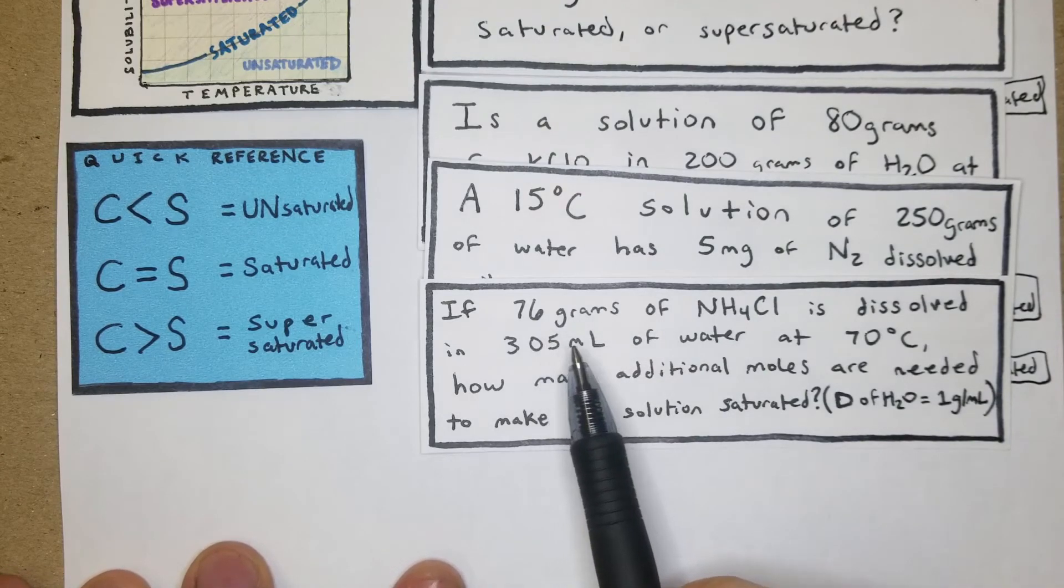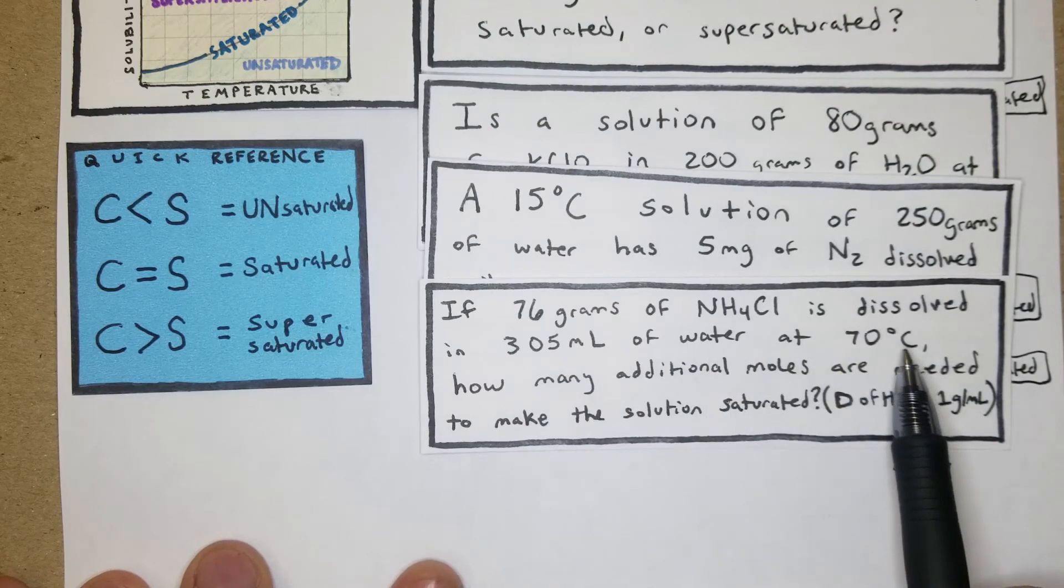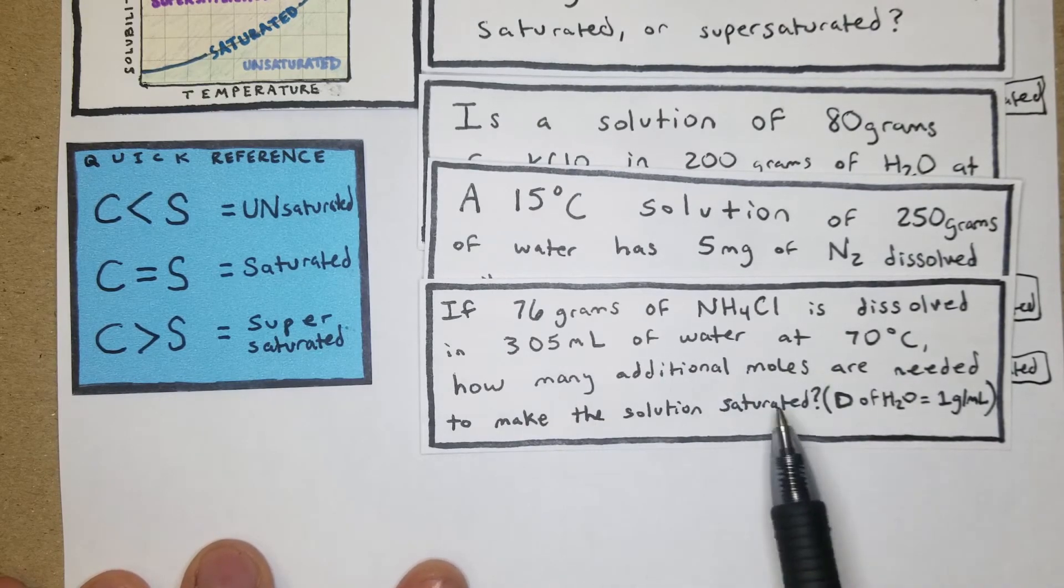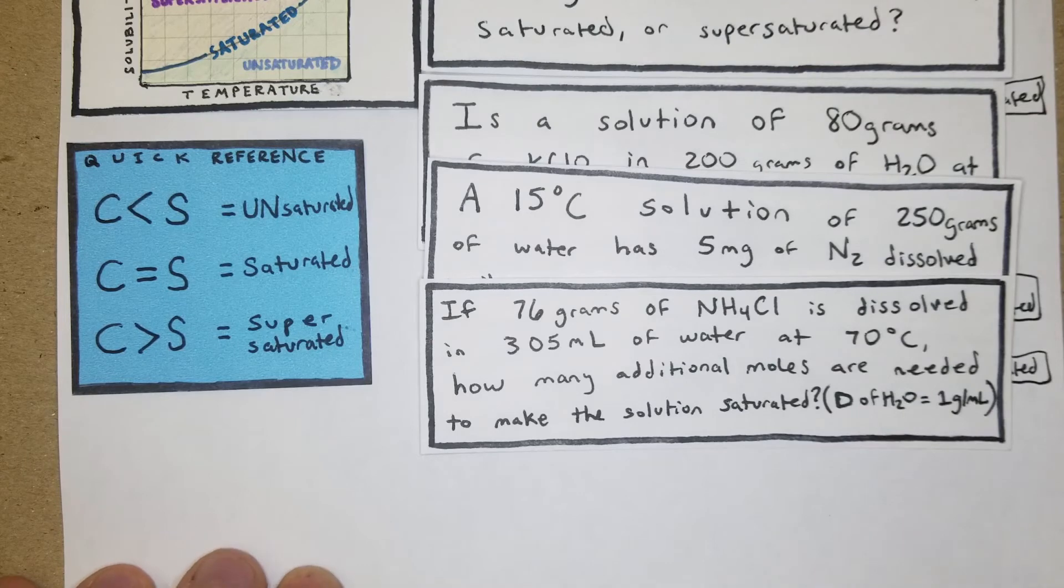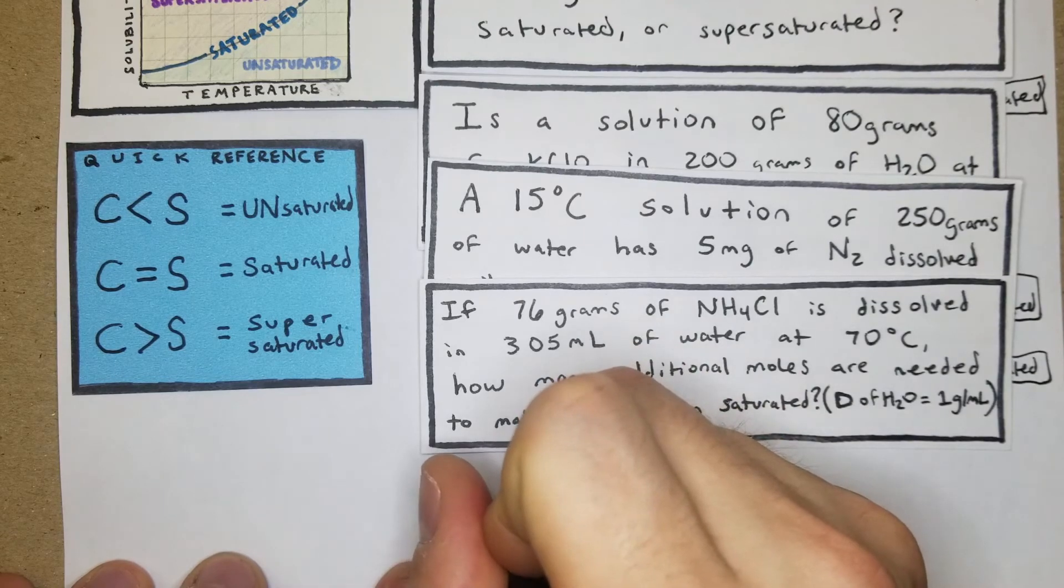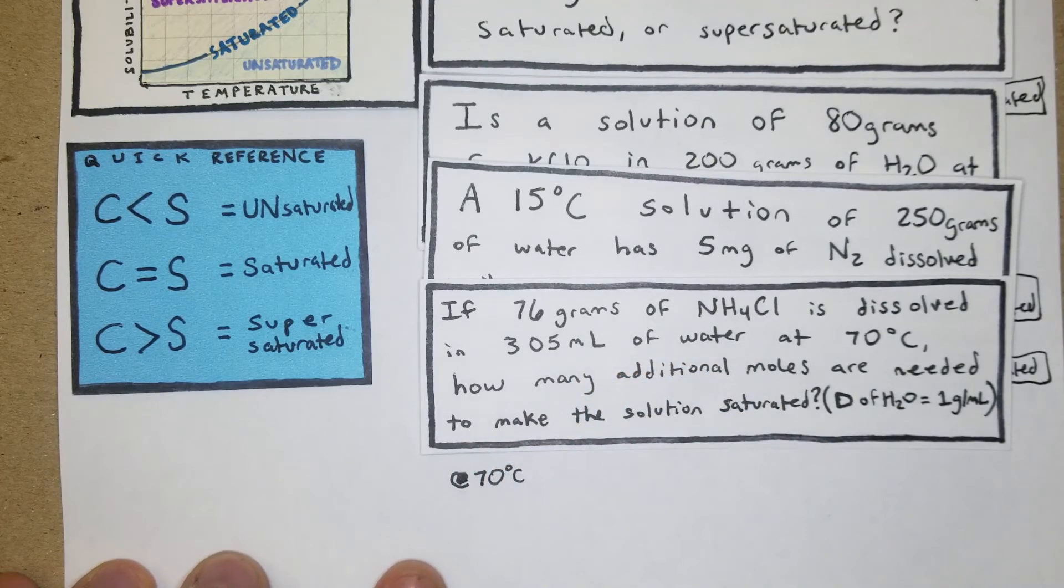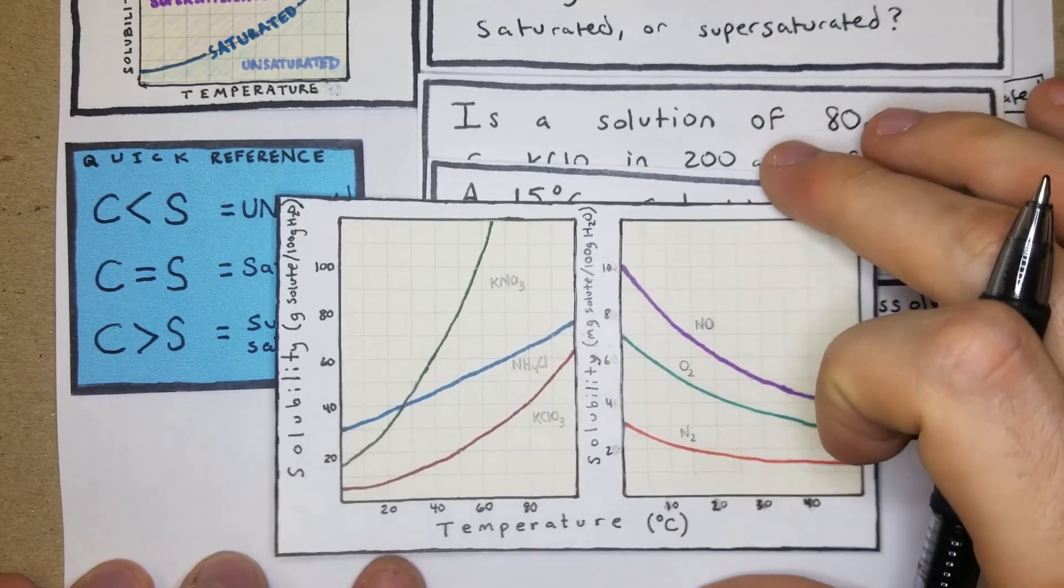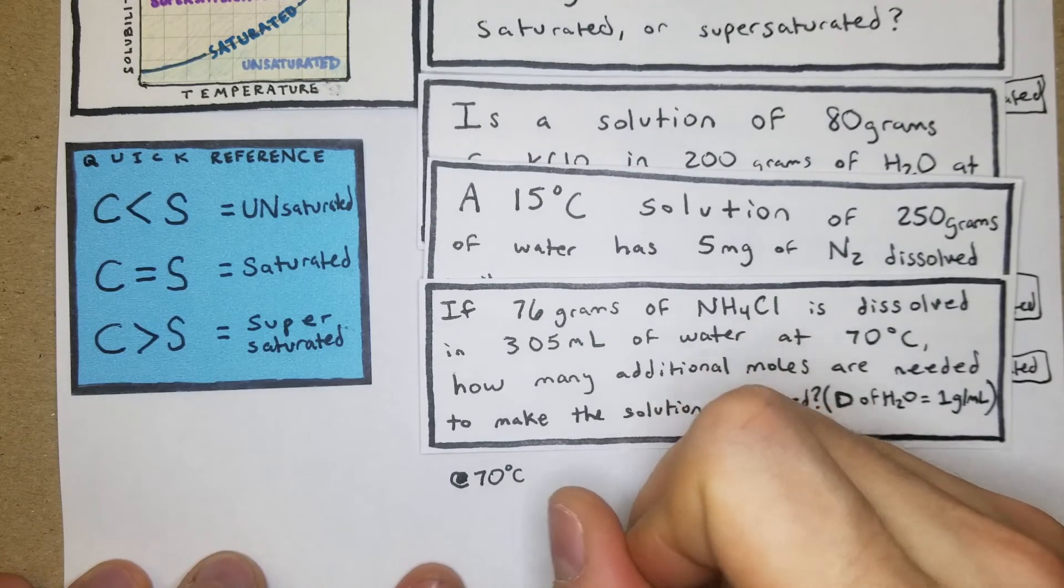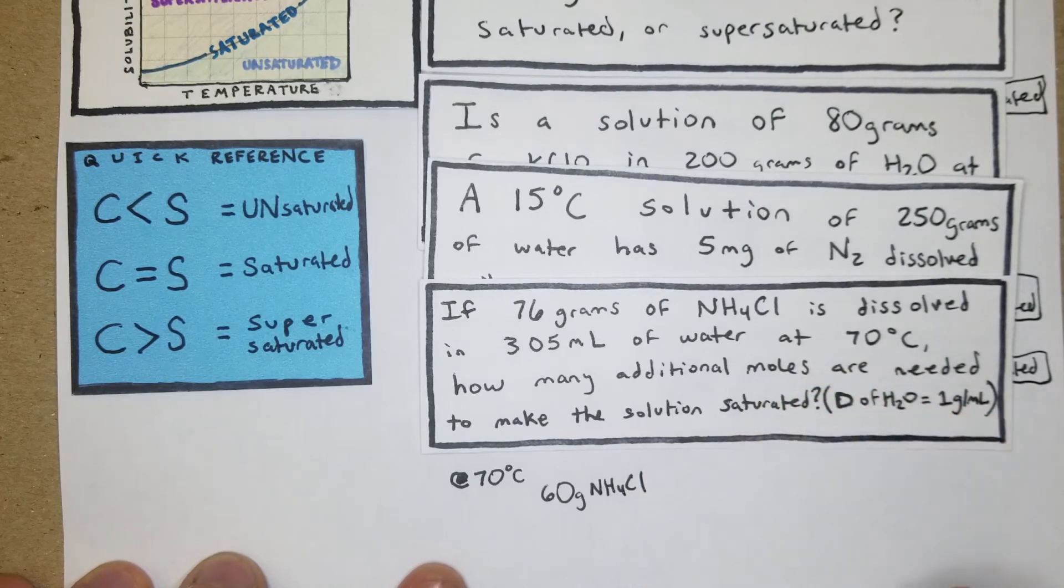If 76 grams of NH4Cl is dissolved in 305 mL of water at 70 degrees Celsius, how many additional moles are needed to make the solution saturated? I think this is pretty much the most difficult as these types of questions can get. At 70 degrees Celsius, we're looking for NH4Cl. NH4Cl at 70 is going to be 60 grams of solute - we can have 60 grams of NH4Cl per 100 grams of water.